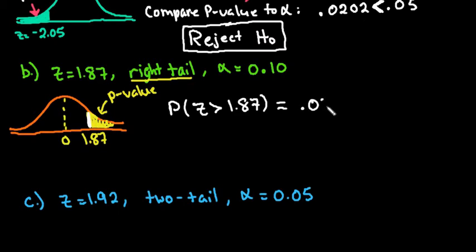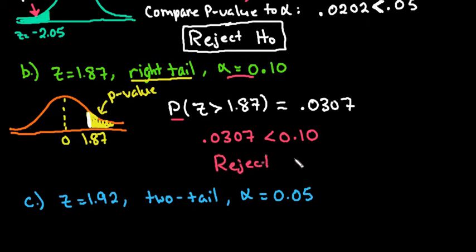So our P value is 0.0307. And then remember, our next step is to compare our P value to our alpha level. So we would look at it, 0.0307 is less than 0.10. And since it is less than, we go ahead and reject the null hypothesis.